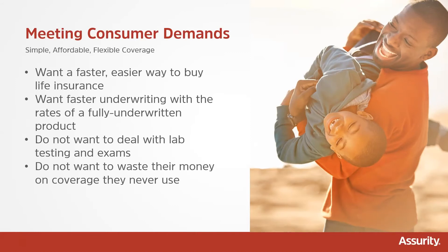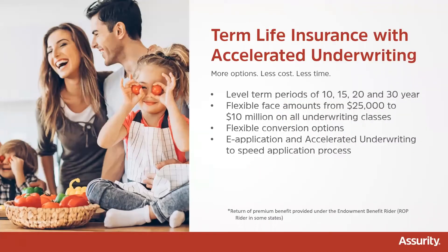Let's take a quick look at some of the highlights of the term plan. Assurity's term plan offers level term periods of 10, 15, 20, and 30 years. We do offer flexible face amounts — you can write this plan down to $25,000 of coverage, up to $10 million of coverage, with all underwriting classes available. The underwriting classes on this product are non-tobacco standard, preferred, and preferred plus. We also have tobacco rates at standard and preferred. We do offer flexible conversion options to move this plan into a permanent product, and we'll learn more about the accelerated underwriting process utilizing an e-application next.